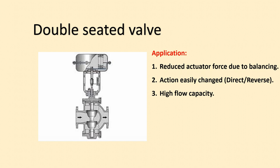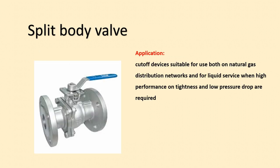Next is the double seated valve body, which has a two plug and seat arrangement. The main application of the double seated valve body is that it is used in high pressure piping because it reduces actuator force due to the balancing effect of the double seated arrangement. Another benefit is that it allows easy changeover from direct to reverse action, and it can handle high flow capacity — meaning a high volume of process fluid and gas — which is why the double seated valve body is used in those applications.